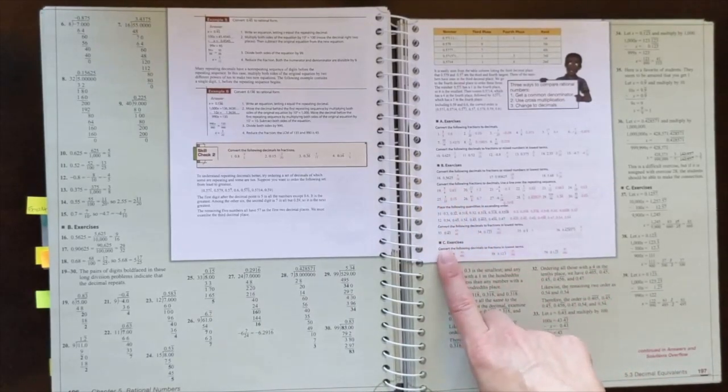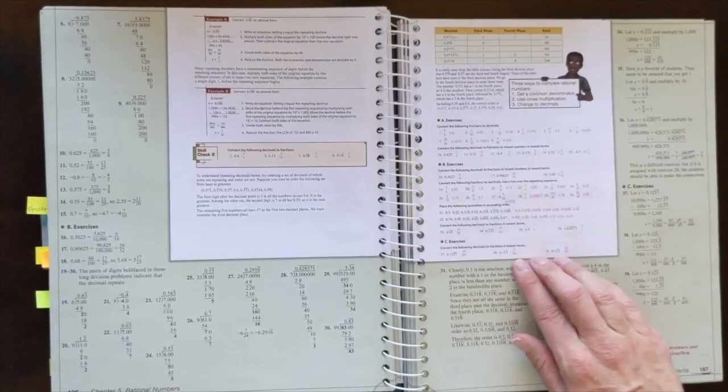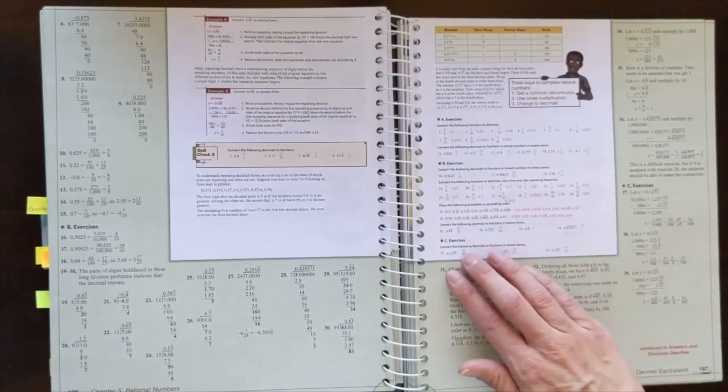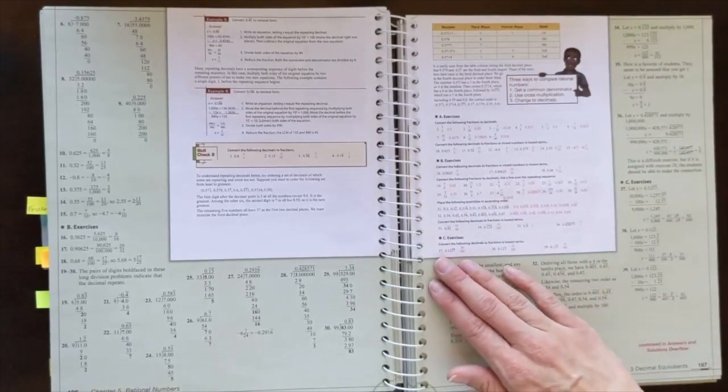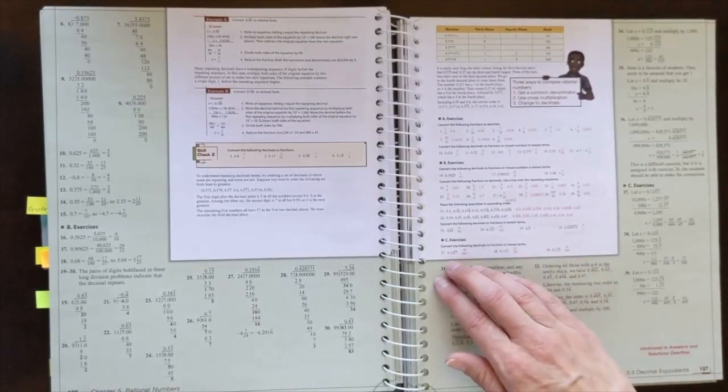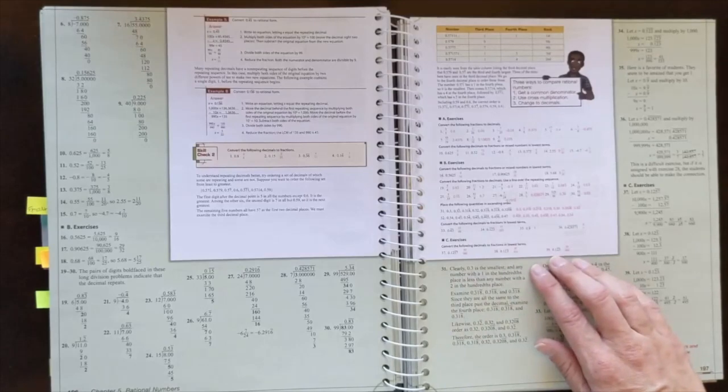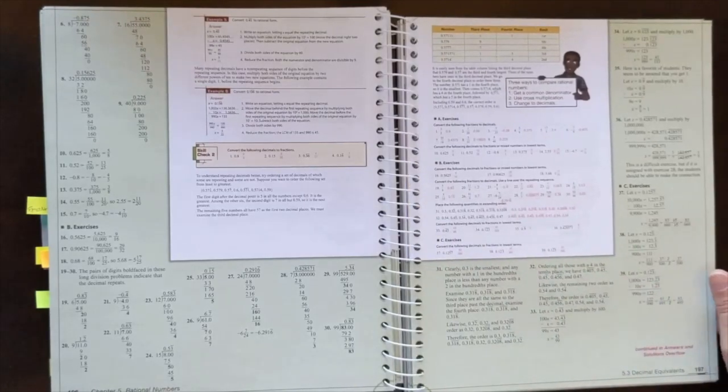Then you're going to see C exercises. Those are more challenging and they're going to require deeper thinking skills. So these C problems, depending on your child's ability, may or may not be doing as many of them. If your child is more on like an honors track or math comes really easily to them, you're going to want to go ahead and give them a lot of those problems. If they're finishing math really quickly, you can just go ahead and assign more of those.